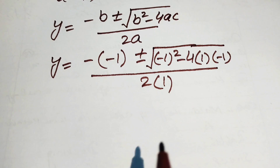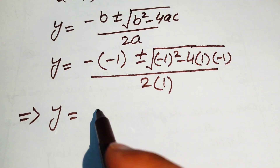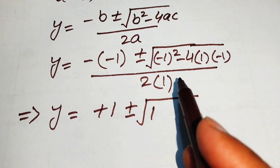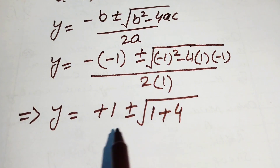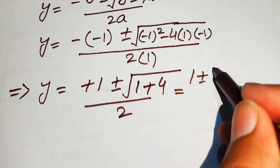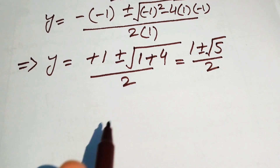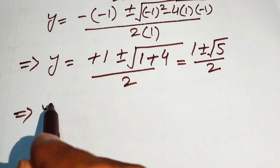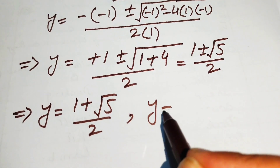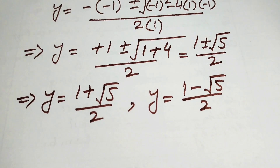Substituting the values: minus b gives plus 1, b² gives 1, and minus 4ac gives plus 4. So the expression becomes y equals (1 ± √5) divided by 2. This gives two cases: y equals (1 + √5)/2 and y equals (1 − √5)/2.